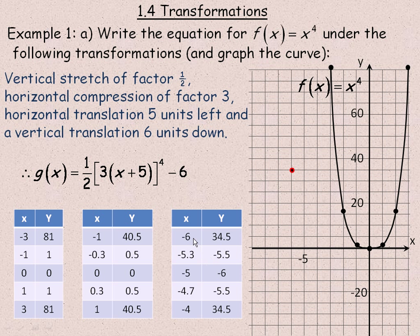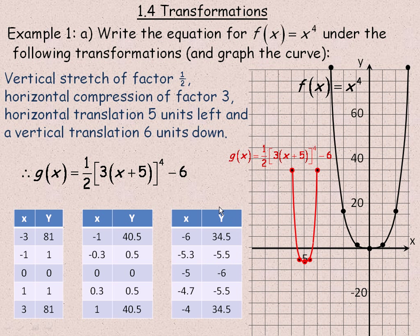Now I'm going to plot these points: negative 6, 34.5; negative 5.3, negative 5.5; and all the others. Then we join them with a smooth curve — and there's our new function. If you take this new function and put negative 6 in place of x, you get 34.5 for y. If you put negative 5.3 in for x, you get negative 5.5, and so on.